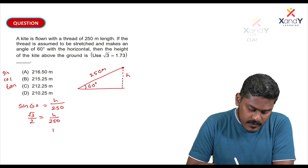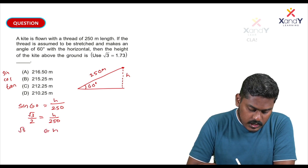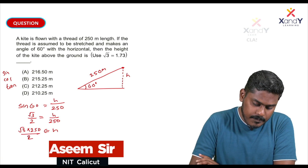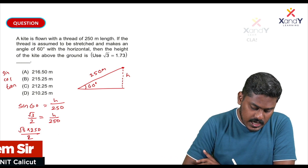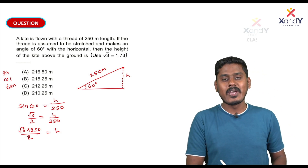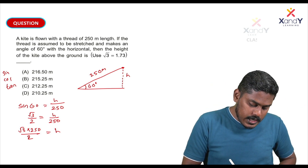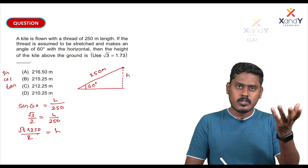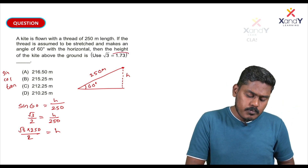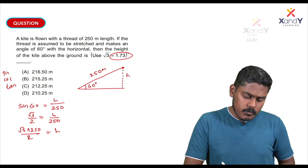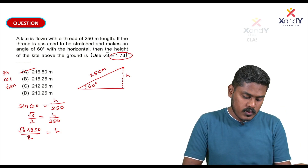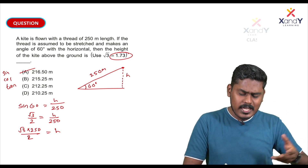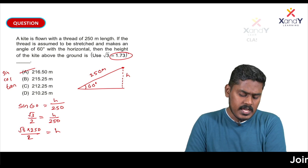We multiply: h equals root 3 into 250 by 2. So h equals 125 root 3. Root 3 value is approximately 1.73, so h is approximately 125 multiplied by 1.73, which gives approximately 216.5 meters.